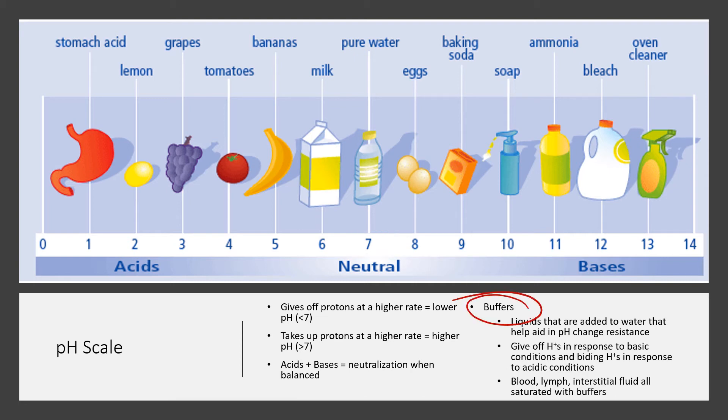Buffers are liquids that are added to water that help aid in pH change resistance. It makes it harder for pH changes to happen. Some buffers, if you take a solution that's pretty basic and you put certain buffers in it, that buffer will give off hydrogens to counteract all the extra basic hydroxide groups to neutralize things. Most of your body fluids have buffers. All of your enzymes, all of your proteins, all of your cellular components work best within a fairly narrow pH range, slightly south of neutral, slightly basic of neutral. To keep your pH in the range that your proteins work best in, you need a lot of buffers.